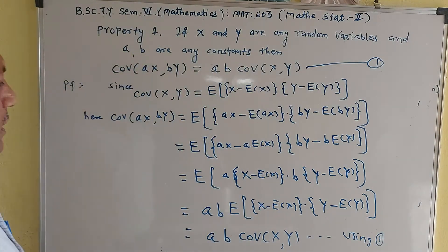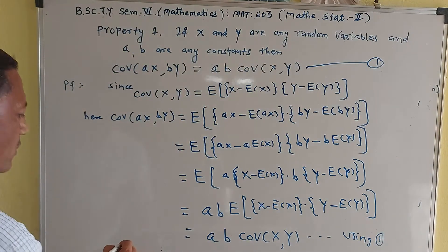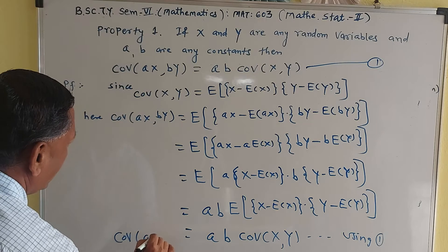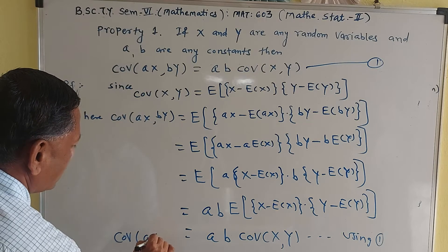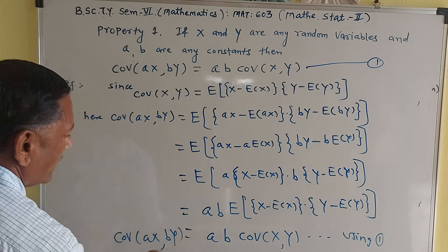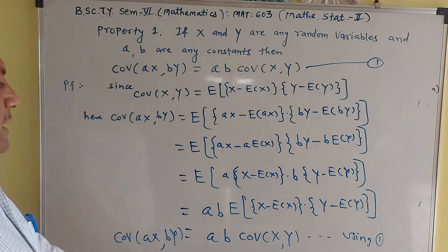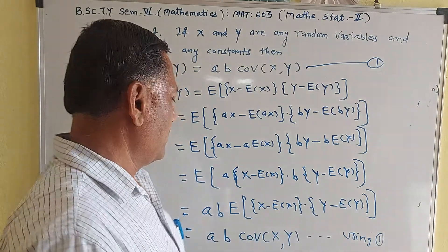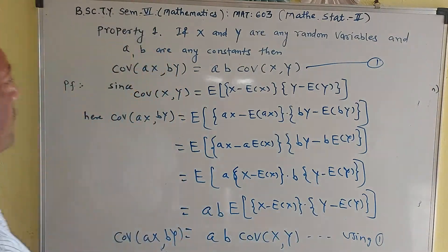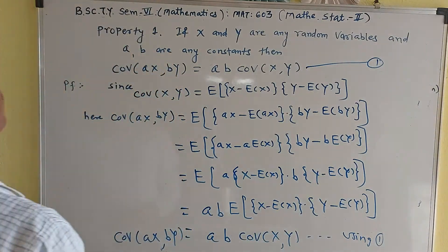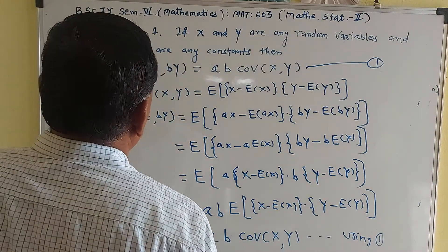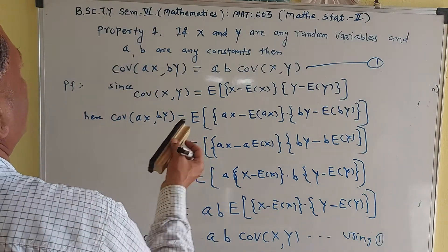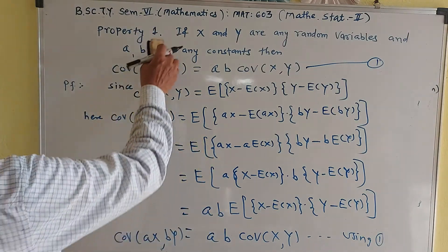So it is equal to a·b times Cov(X,Y), using the definition of covariance. Therefore Cov(aX, bY) = ab·Cov(X,Y). Similarly, you can prove the remaining properties as homework.